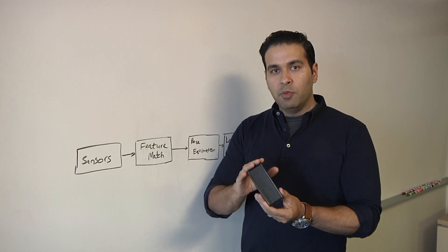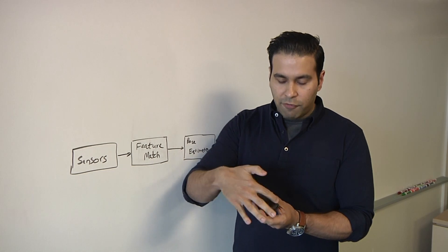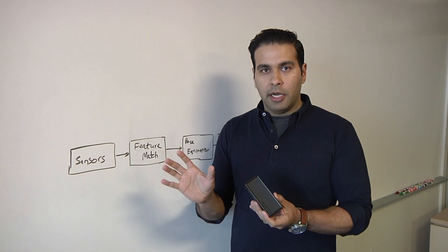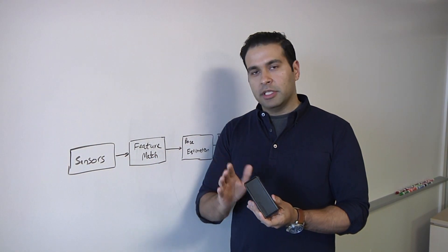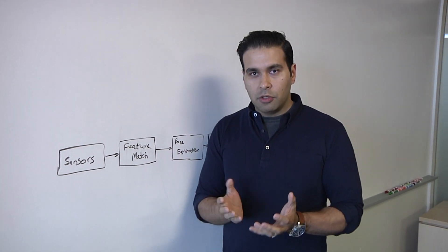But, when you move to frame number two, the goal is you want to be able to identify one, two, three, four as the same corner points or interesting points in the second frame. Now, how you relate those two, there are a variety of algorithms that can be used to do that.